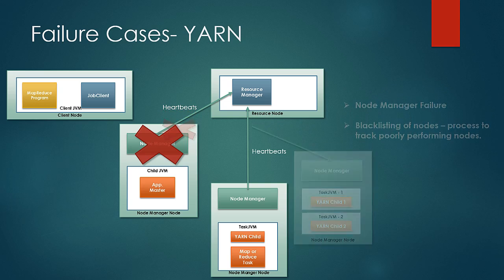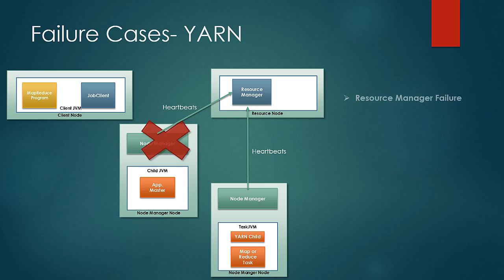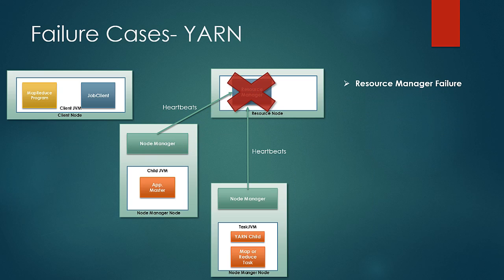Resource Manager failure is another and the most serious failure that can occur. Without it, neither jobs nor task containers can be launched. But in YARN, there is a little improvement — a checkpoint mechanism is put in place to recover from a crash, which is an improvement from the classic MapReduce framework, which had none. After a crash, a new Resource Manager instance is brought up by the administrator and it recovers from the last saved state, so reruns of all jobs are not required.